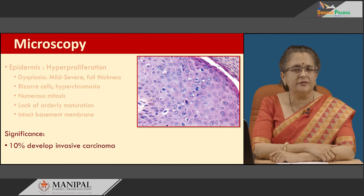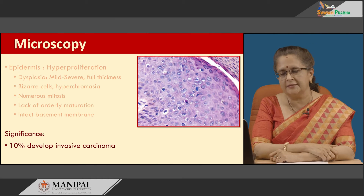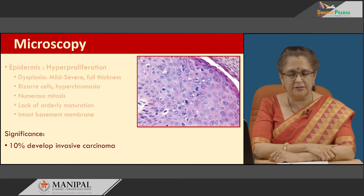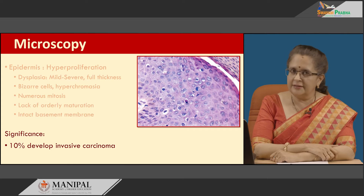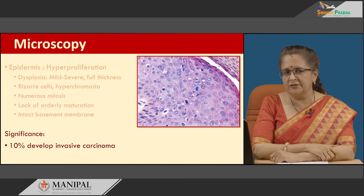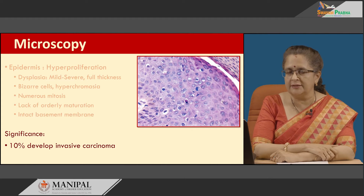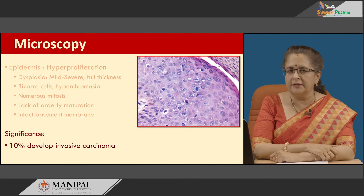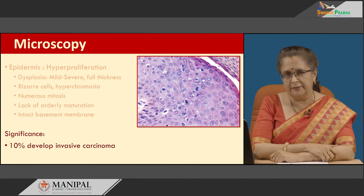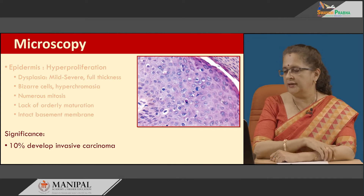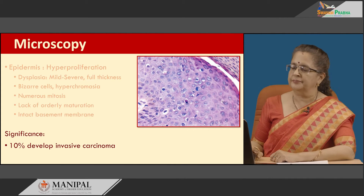The significance of this is that 10 percent of these patients develop invasive carcinoma. Erythroplasia of Querat appears red because of dilated vasculature seen just below the involved epidermis, as well as an inflammatory infiltrate.